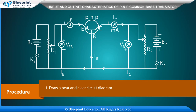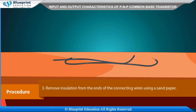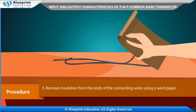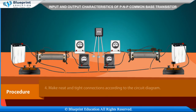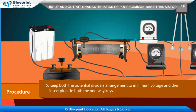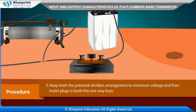Procedure: Draw a neat and clear circuit diagram. Arrange all apparatus on the table according to the circuit diagram. Remove insulation from the ends of the connecting wires using sandpaper. Make neat and tight connections according to the circuit diagram. Keep both potential divider arrangements at minimum voltage, then insert plugs in both one-way keys.